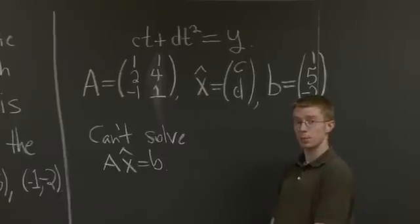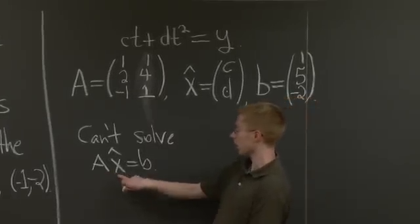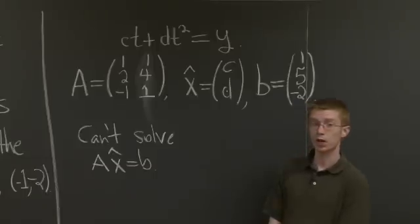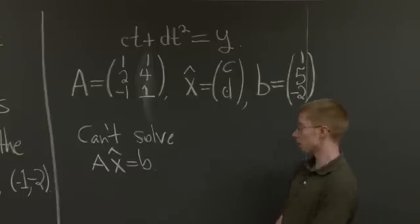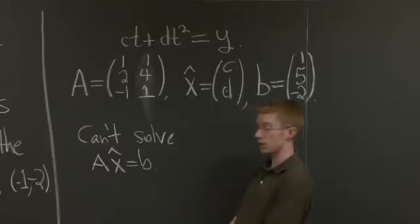But we need to find the best approximation to that. So that's the same as solving Ax̂ equals the projection of b onto the column space of A, because we only have a chance of solving Ax̂ equals something if it's in the column space of A.